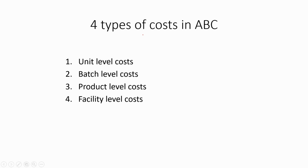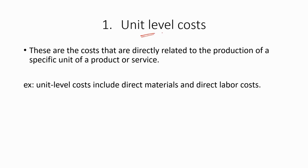Now that we know all the terms under activity-based costing, let's discuss the different types of costs. There are four types: unit level costs, batch level costs, product level costs, and facility level costs. Unit level costs are costs directly related to the production of a specific unit of a product or service — for example, direct materials and direct labor costs. These costs are incurred at the unit level, so all direct costs can be identified as unit level costs.